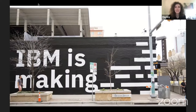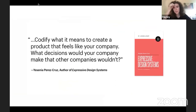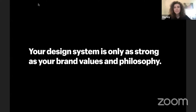With my first design language at IBM, designing a system for 3,000 products felt more like a rodeo than a dance. Telling stories and giving rationale that inspires the why behind the design is key to unlocking flexibility and creativity while enabling teams to stay on beat with systems. Jessenia Perez Cruz, our senior UX lead for Polaris at Shopify, sums up in her book Expressive Design Systems what my time building concepts at IBM was all about. She says: "Codify what it means to create a product that feels like your company. What decisions would your company make that others wouldn't?" At IBM, I learned that your design system is only as strong as your brand values and philosophy.